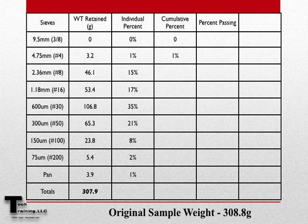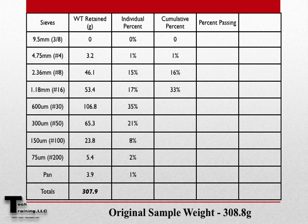The cumulative percent retained is achieved by taking the individual percent retained on any given sieve and adding to it the individual percent retained of all the previous sieves. Therefore, on the 2.36mm sieve, our cumulative percent retained would be 16%. While on the 1.18mm sieve, our cumulative percent retained would be 33%. Let's now move on to percent passing.